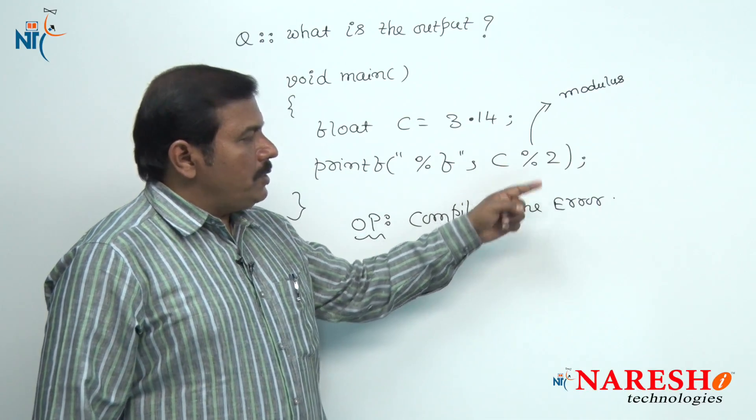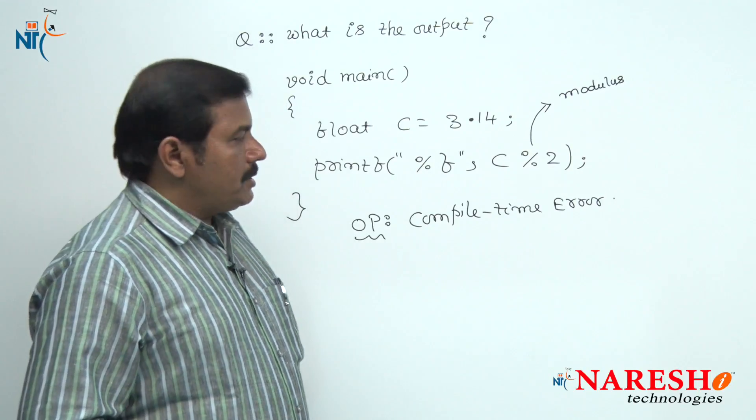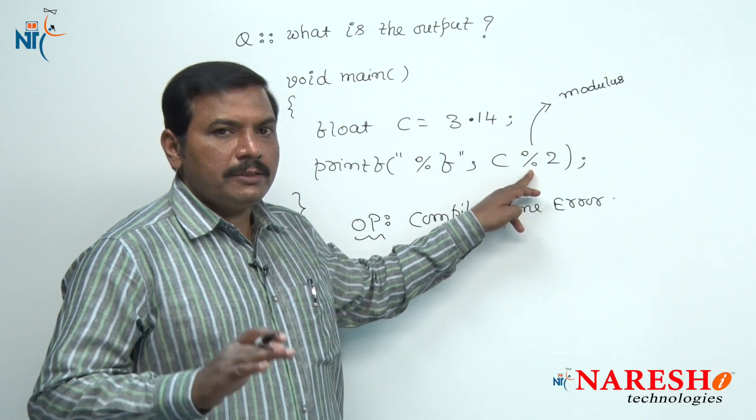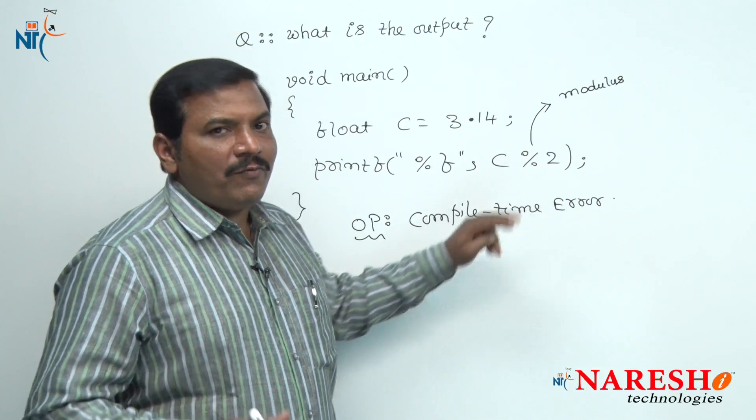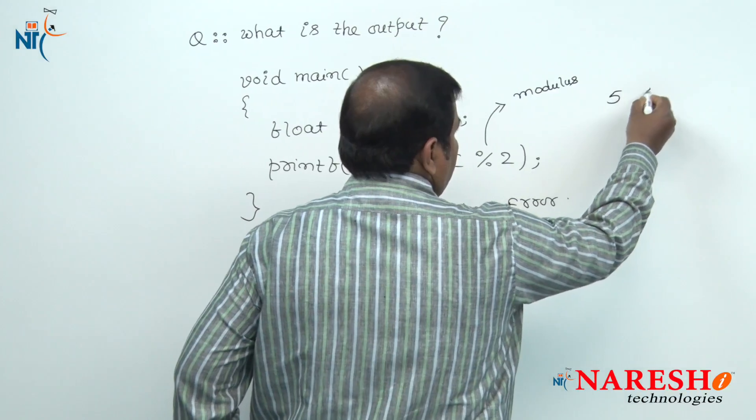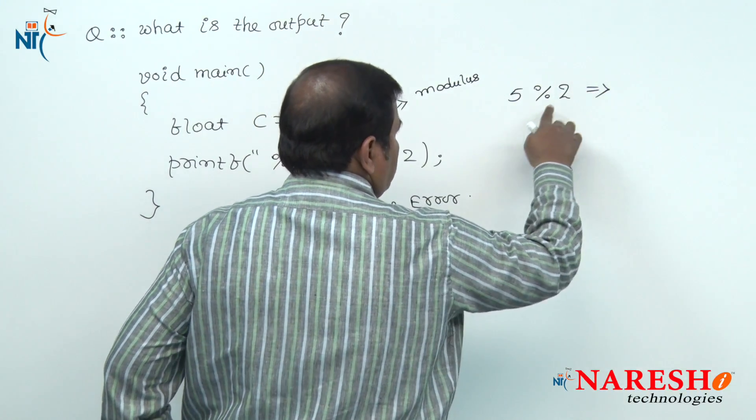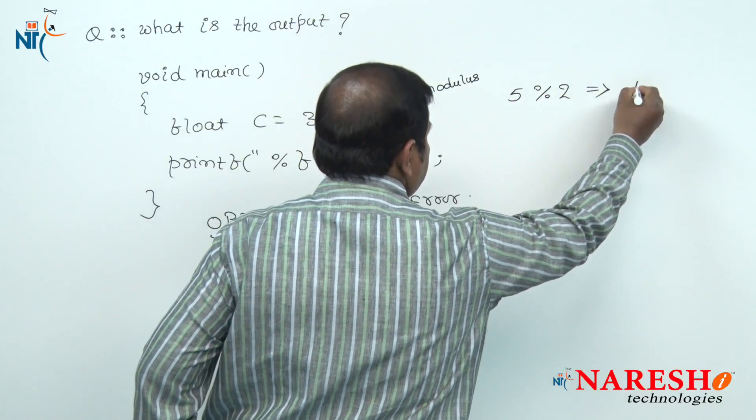What is the reason? This modulus operator needs both operands as integers because it produces remainder after performing integer division. As an example, 5 modulus 2—the remainder produced by this operator is 1.